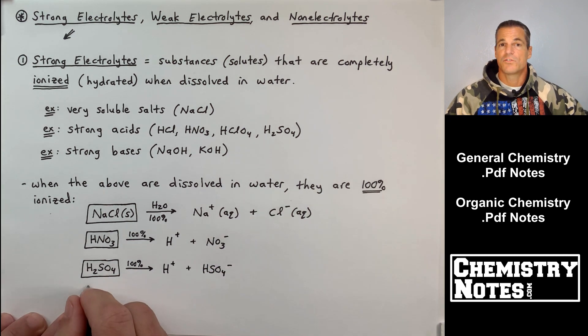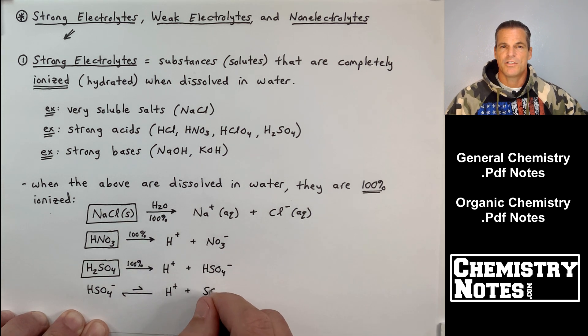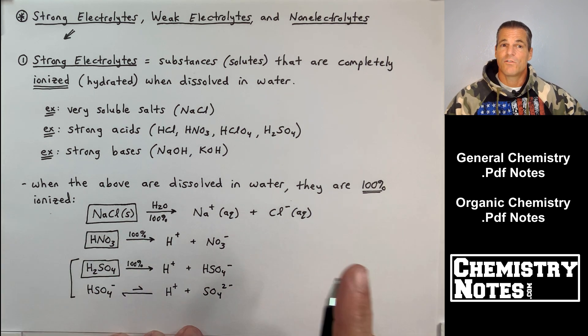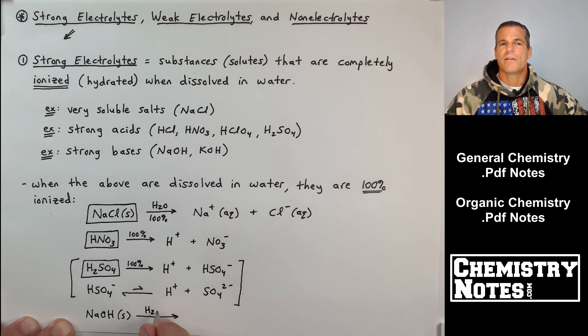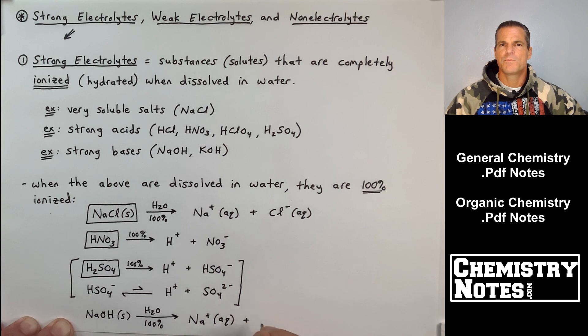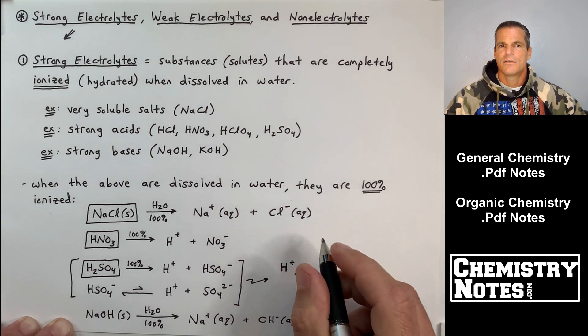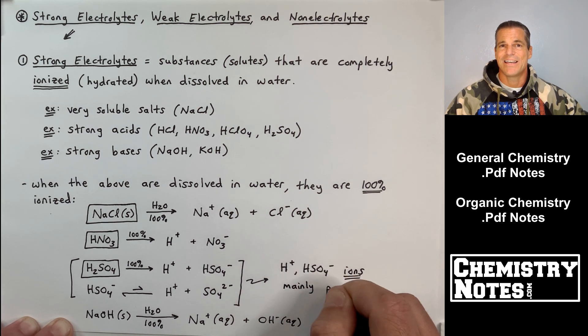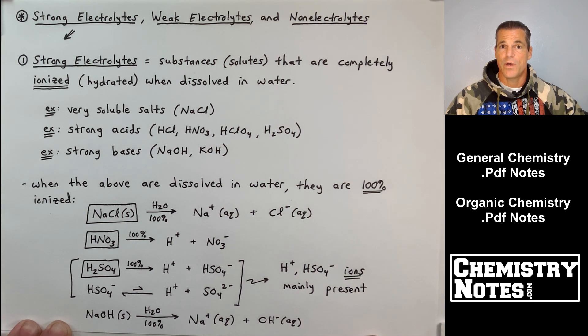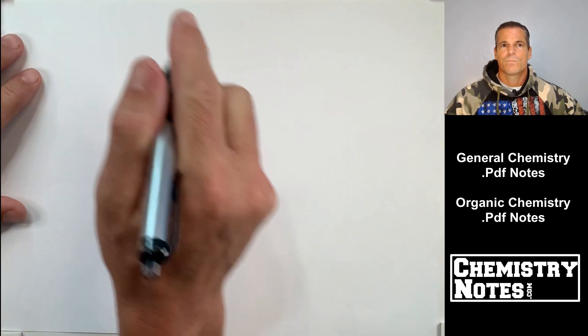H2SO4 is a strong acid, so it ionizes 100% to H+ and HSO4-. Now, HSO4- is also itself an acid, although it's a weak acid. So for the most part, you have H+ and HSO4-. But again, every one I've drawn here is 100% ionized, including the NaOH, the last one.